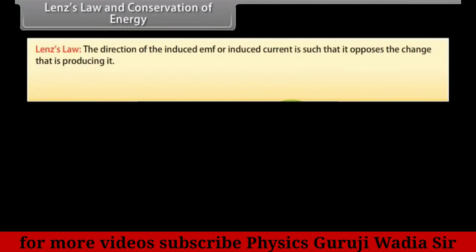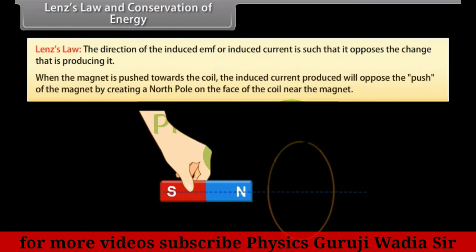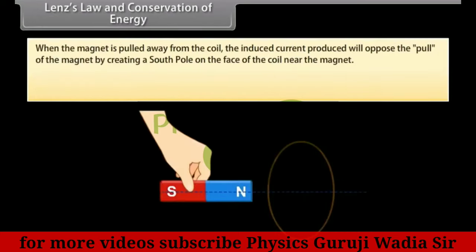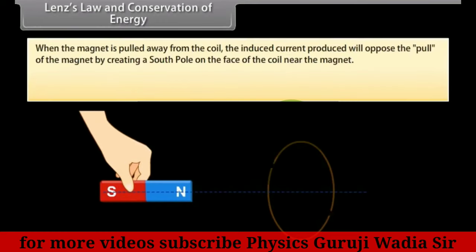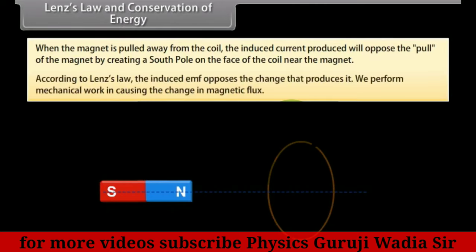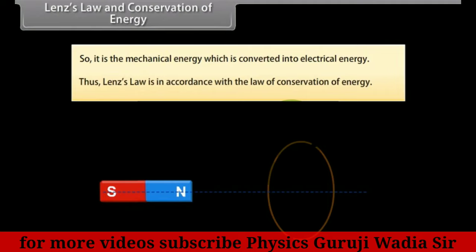Lenz's Law and Conservation of Energy: Lenz's law states that the direction of the induced EMF or induced current is such that it opposes the change that is producing it. When the magnet is pushed towards the coil, the induced current opposes the push by creating a north pole on the face of the coil near the magnet. The induced EMF opposes the change that produces it; we perform mechanical work in causing the change in magnetic flux, so mechanical energy is converted into electrical energy. Thus, Lenz's law is in accordance with the law of conservation of energy.